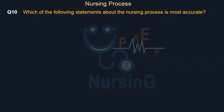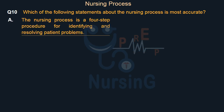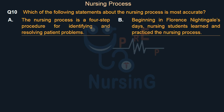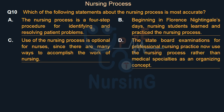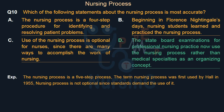Which of the following statements about the nursing process is most accurate? Option A: The nursing process is a four-step procedure for identifying and resolving patient problems. Option B: Beginning in Florence Nightingale's days, nursing students learned and practiced the nursing process. Option C: Use of the nursing process is optional for nurses, since there are many ways to accomplish the work of nursing. Option D: The state board examinations for professional nursing practice now use the nursing process rather than medical specialties as an organizing concept. Right answer is Option D. The nursing process is a five-step process. The term 'nursing process' was first used by Hall in 1955. Nursing process is not optional since standards demand the use of it.